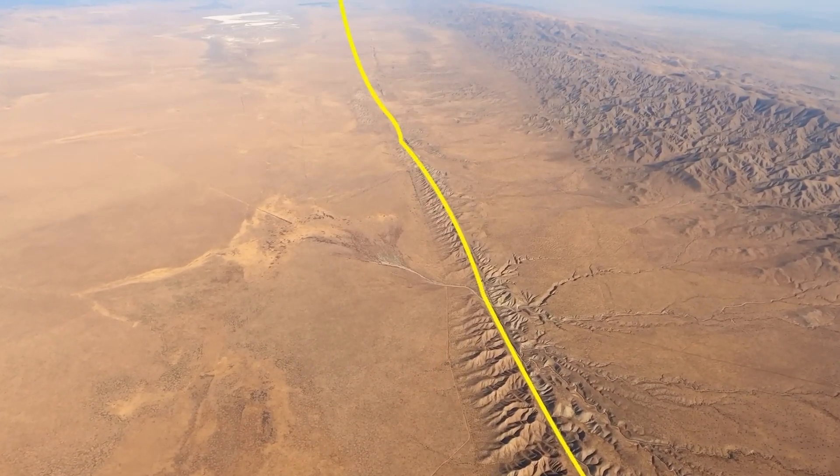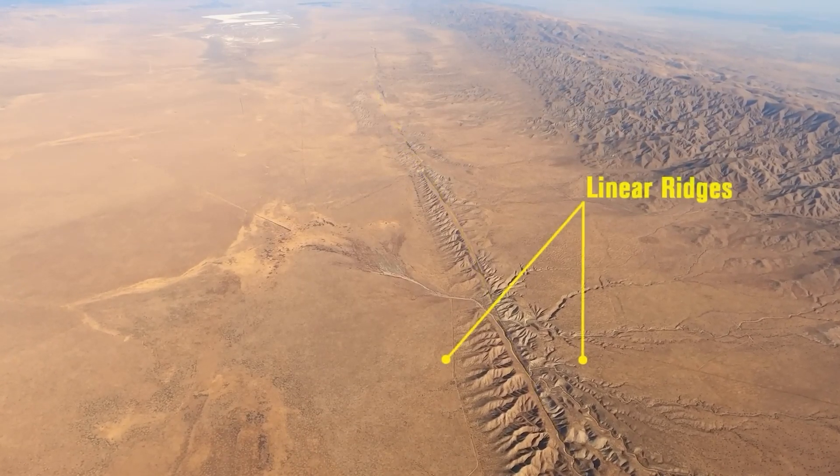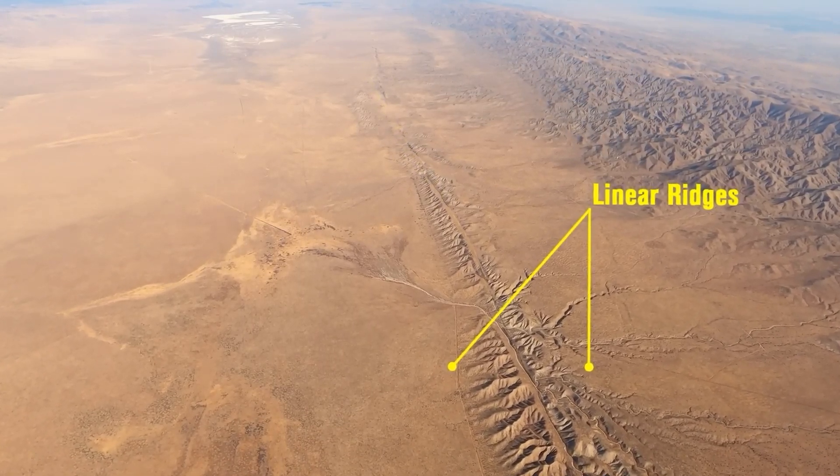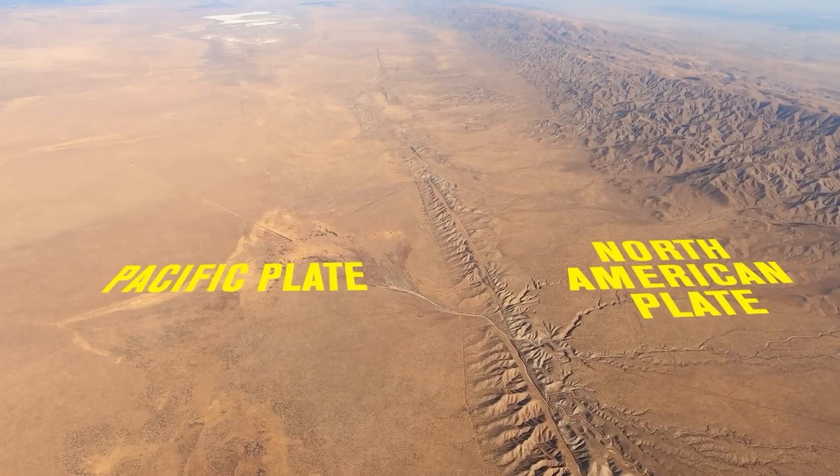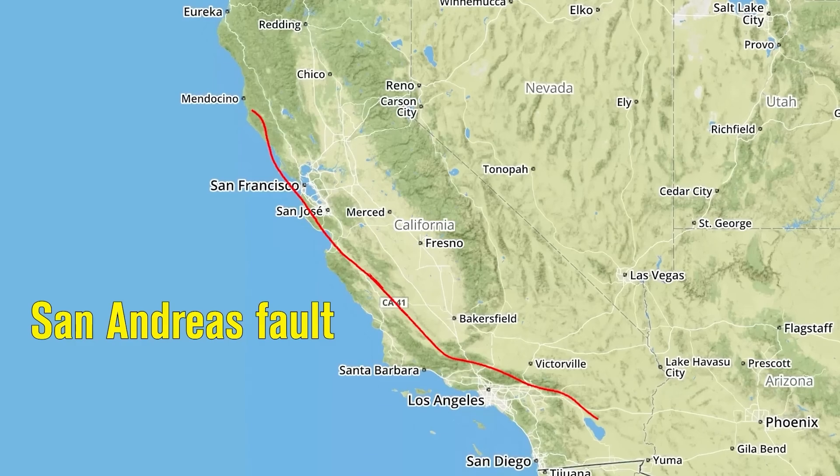One of the most famous transform boundaries is the San Andreas Fault in California. This fault is the meeting point between the Pacific Plate and the North American Plate. These plates have been sliding past each other for millions of years.